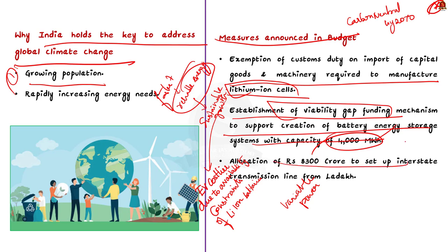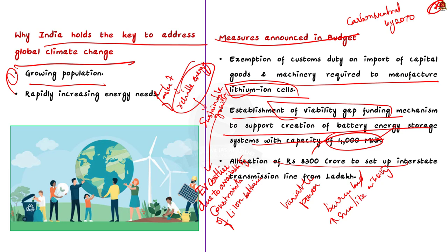Finally, the government has allotted ₹8,300 crore towards setting up an interstate transmission line from Ladakh. Ladakh has vast barren land and one of the country's highest levels of sunlight availability — its renewable energy potential is around 13 gigawatts. However, there are currently not many solar power plants in Ladakh because there is no interstate transmission line. Even if power is produced, it cannot be transmitted to the country's main grid. This allocation will help tap Ladakh's solar energy potential.